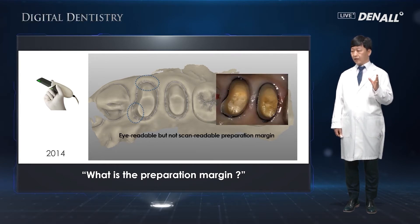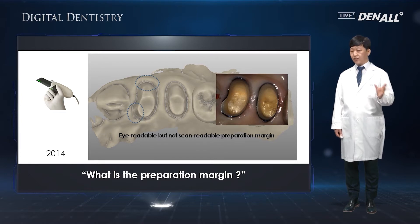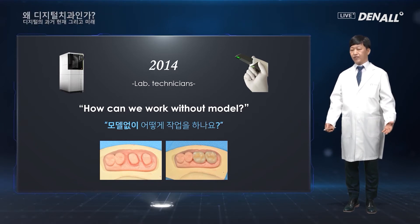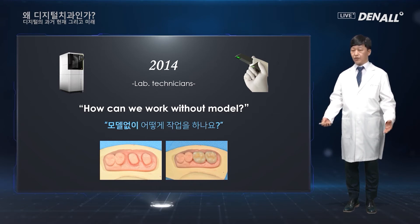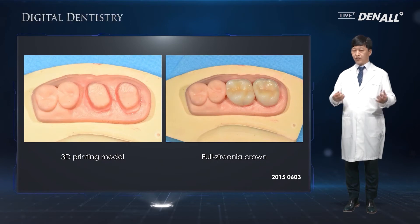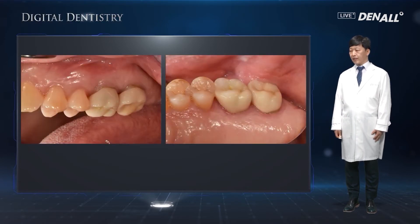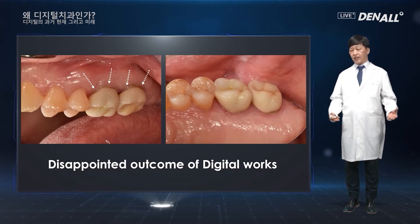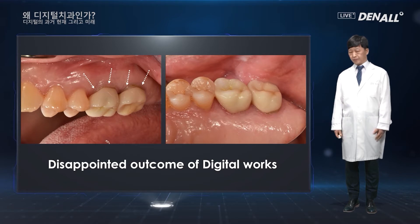In the patient's mouth, the preparation margin was very clear. However, once scanned, you could not tell it apart. The second problem was that lab technicians wanted a model, saying they could not work without one. Therefore, I made a huge investment — I bought a 3D printer and printed out models and sent them to the lab for every case. However, the result was not really satisfactory. At times, the marginal was short and sometimes there was a gap. As these problems repeated, I thought there were limitations to doing procedures using digital technique.